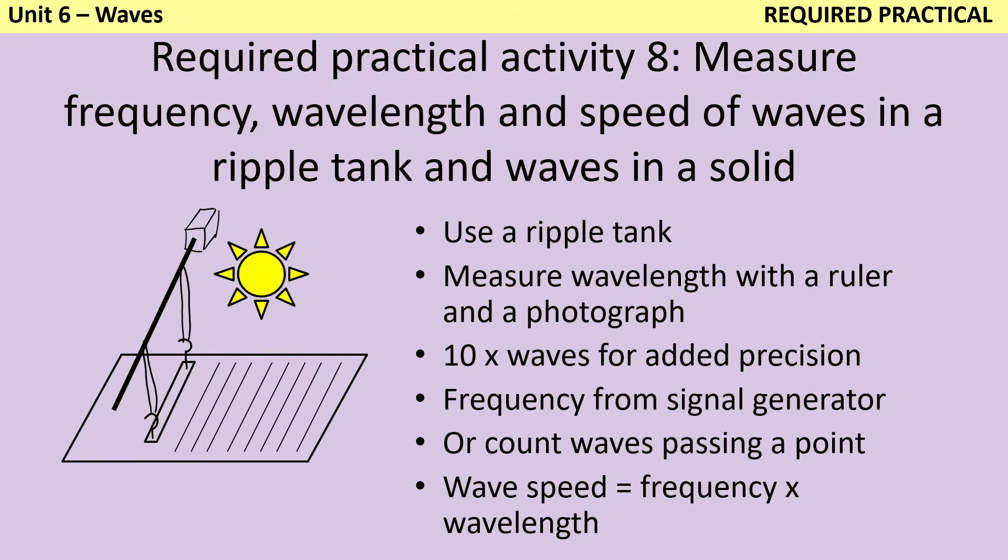These waves are moving and so you can't really measure them in real time, but what you can do is take a photograph that also includes a ruler that you've put alongside, and then you can measure the wavelength on that static picture. One thing you can do to make your data more precise is rather than just measuring from one peak to the next peak, you could measure the length of 10 waves in one go and then divide that length by 10.